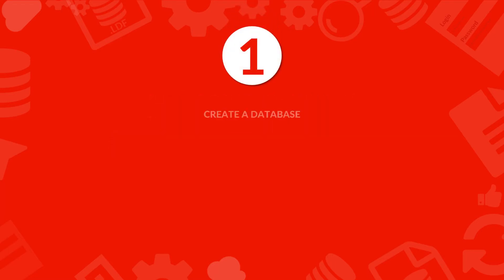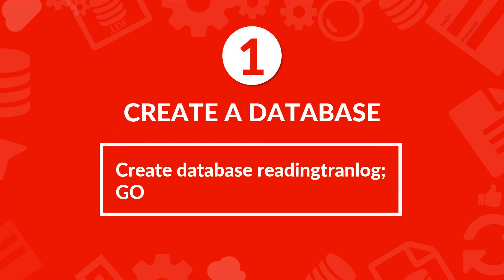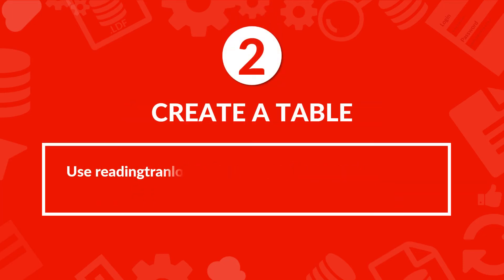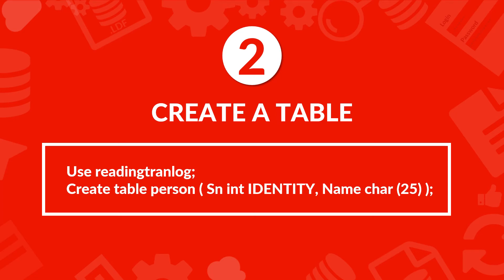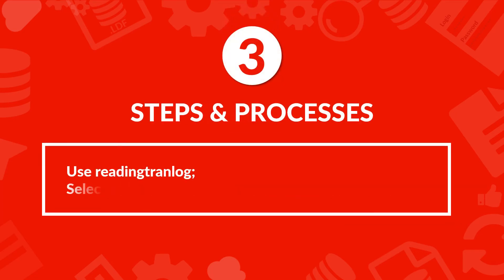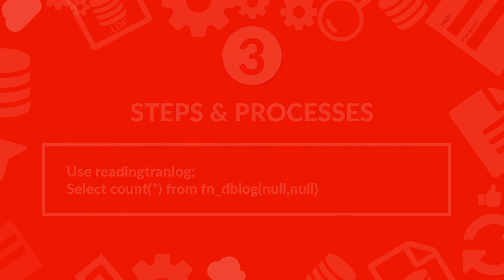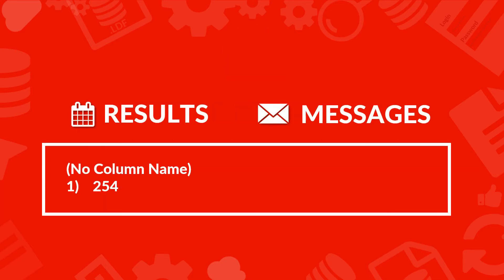The first step is to create a database. The second step is to create a table in this database. In the third step, with the help of the fn_dblog function, we can find out how many steps and processes were taken by the SQL Server to create the database and table. In the results section, you can see the number of steps taken by SQL Server for creating tables and the database.